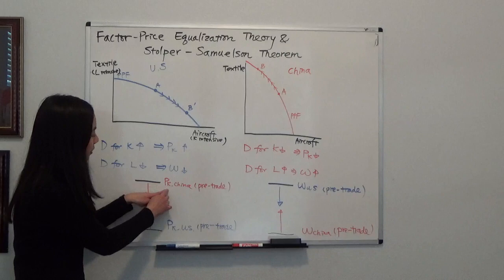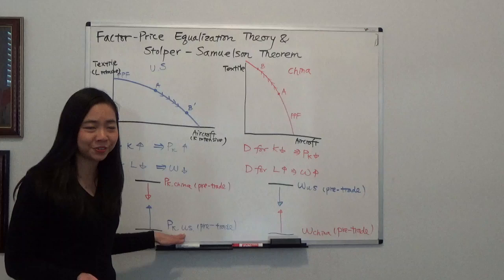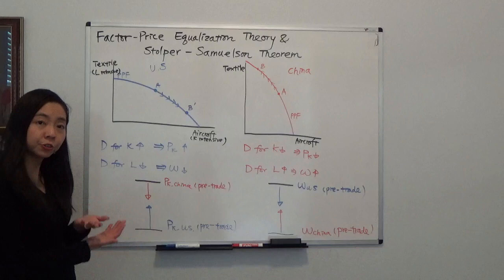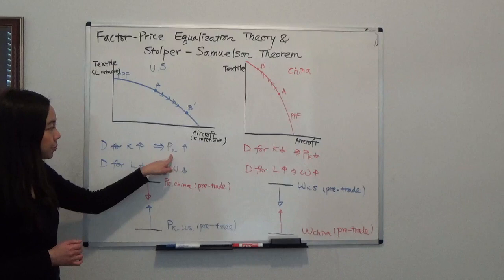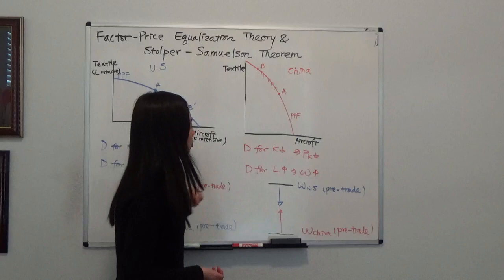Suppose this is the price of capital before trade. We know China, before trade, is relatively labor abundant, so the price of capital was higher. And in the U.S., because of capital abundance, the price of capital was relatively low before trade. After trade, because the price of capital goes down in China and the price of capital goes up in the U.S., eventually the price will equalize. That is the factor price equalization theory.